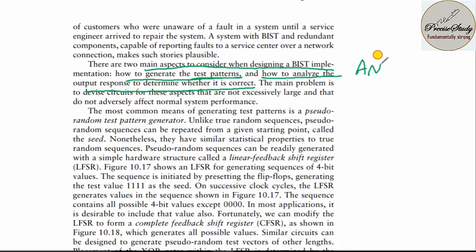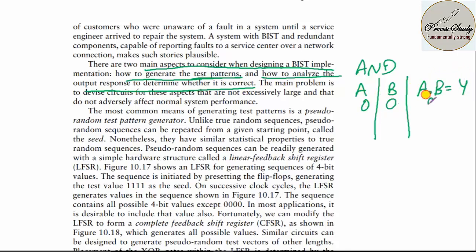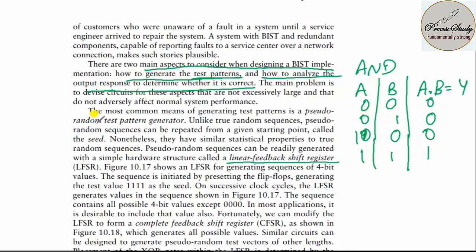For example, to realize an AND gate, you use a truth table as a reference: when A and B are inputs, output Y = A AND B. For 0,0 → 0; 0,1 → 0; 1,0 → 0; 1,1 → 1. Based on this, you test for the test cases. In the case of built-in self-test, you make use of a pseudo-random test pattern generator and also linear feedback shift registers (LFSR) to test the components.